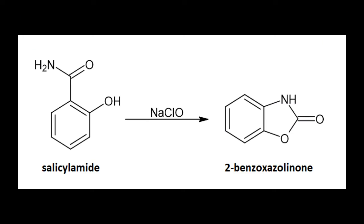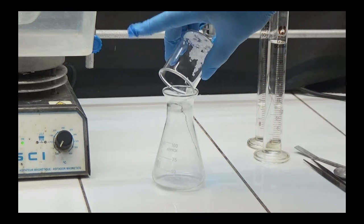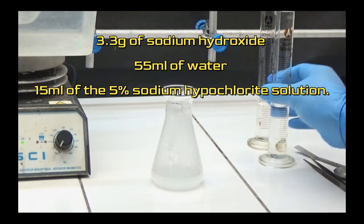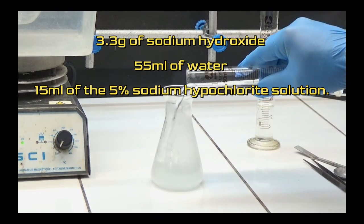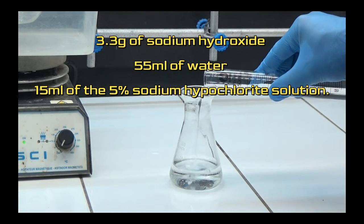After obtaining salicylamide, we will learn how to obtain 2-benzoxazolinone. The initial step is to make the hypochlorite solution. In a 100ml Erlenmeyer flask, I diluted 3.3g of sodium hydroxide in 55ml of water and added 15ml of the 5% hypochlorite solution.